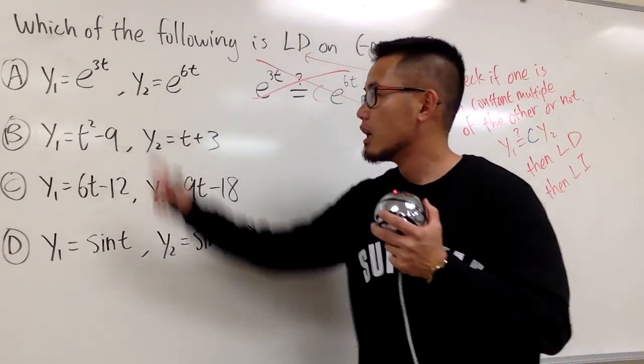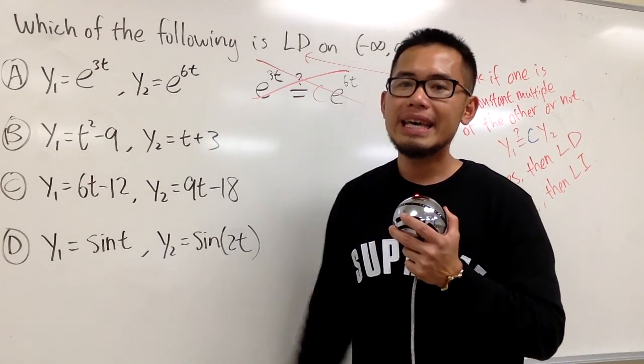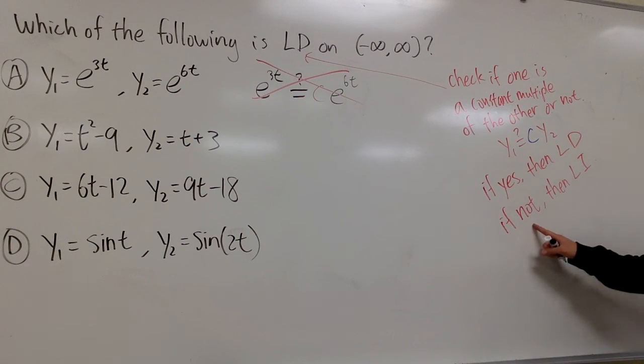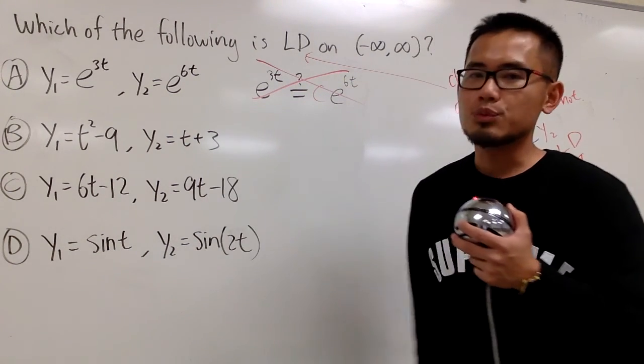So, in this case, these two functions are linearly independent, because they are not constant multiples of each other. And now let's move to the next one.